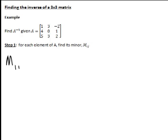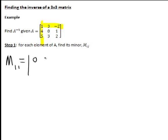The way we find this is we exclude the row containing that element — in this case row 1 — and the column containing that element — in this case column 1 — and find the determinant of the matrix that remains. So M11 would be the determinant of the matrix [0, 1; 3, 2]. I'll work out these determinants soon, but I'll leave it like that for now.